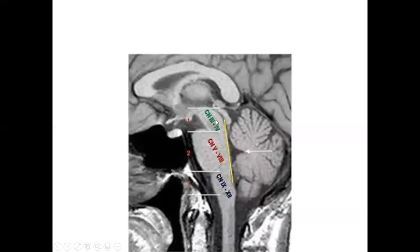For the cranial nerves: the third and fourth cranial nerves arise from the midbrain, the fifth to eighth arise from the pons, and the ninth to twelfth arise from the medulla.